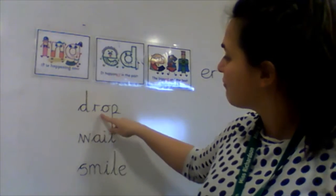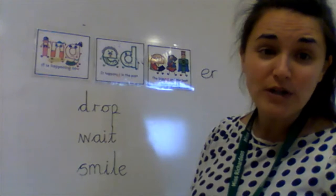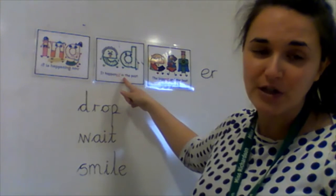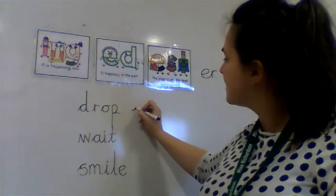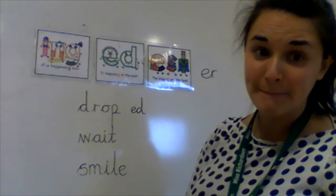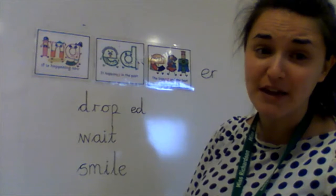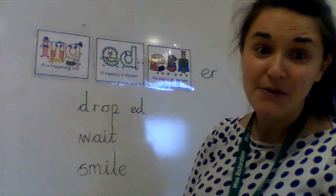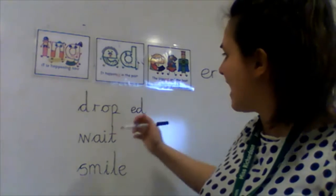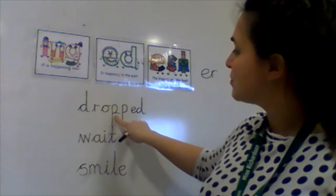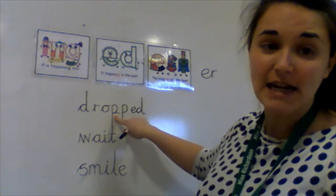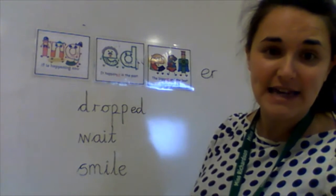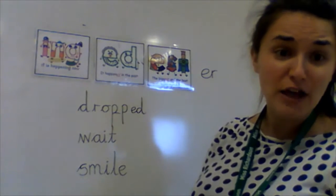I have the word 'drop' — what would I do? Can you remember if I wanted to turn it into 'dropped'? Can I just add the 'ed' suffix straight away? No, I can't. I have to do something first. Can you remember what I have to do? I have to double the last letter — the last letter in the root part of the word 'drop'. The last letter was the p, so I need to double that last letter before I add 'ed'. Why do I have to do that? Can you remember?